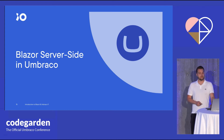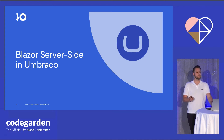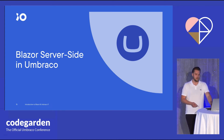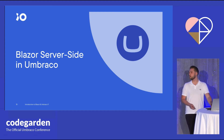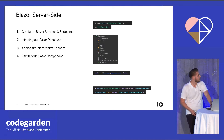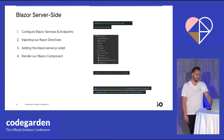The benefit of Blazor Server-Side in particular is that we can add it to an existing Umbraco 9 application relatively easily. Not just that, but because instead of having our entire front-end application rely on a framework like Blazor, we can choose to only use one or more particular Blazor components in our existing application instead of requiring our entire front-end to be a Blazor application. So let's take a quick peek at the technical requirements.